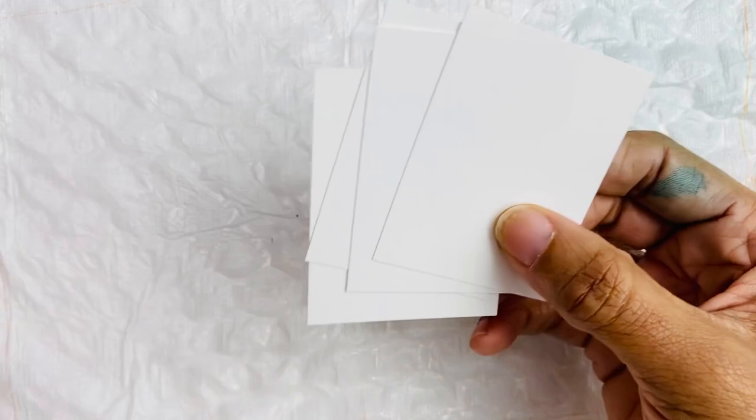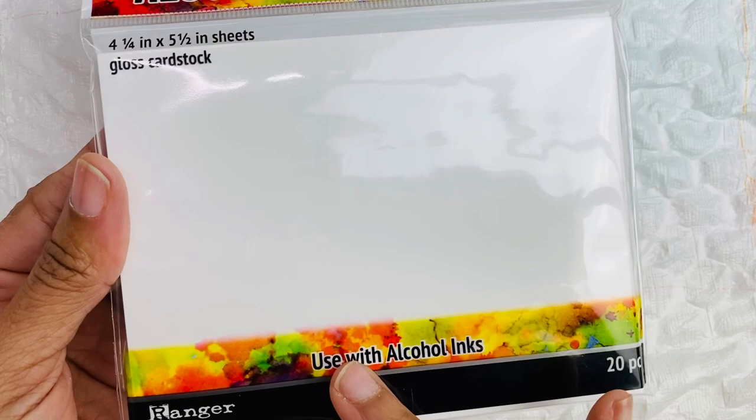Again, that is 2 and 1/8 by 2 and 3/4 inches. And that is essentially one sheet of this cardstock cut down into four equal pieces. Okay, so you can get quite a lot of swatches out of a single pack of that cardstock.